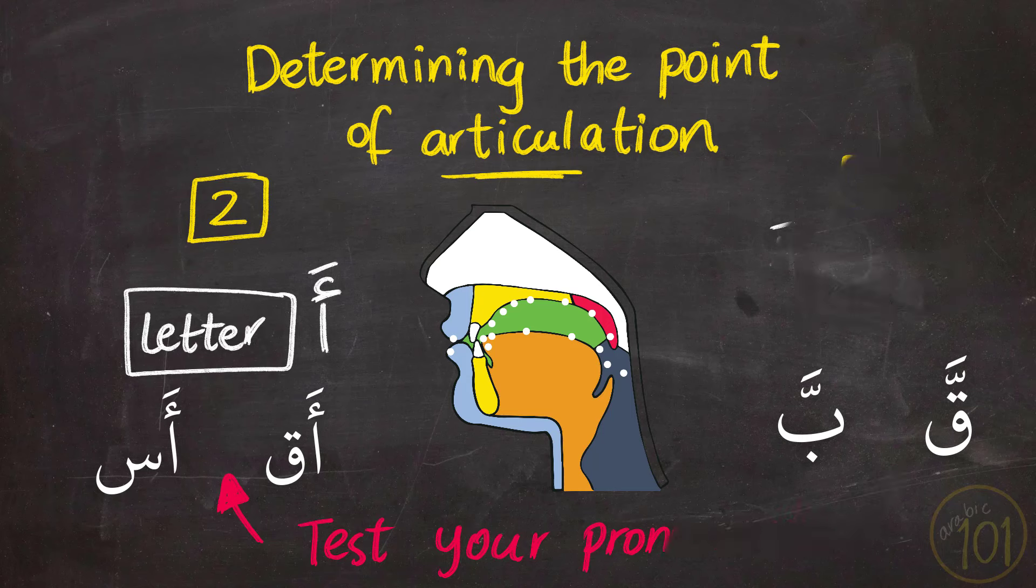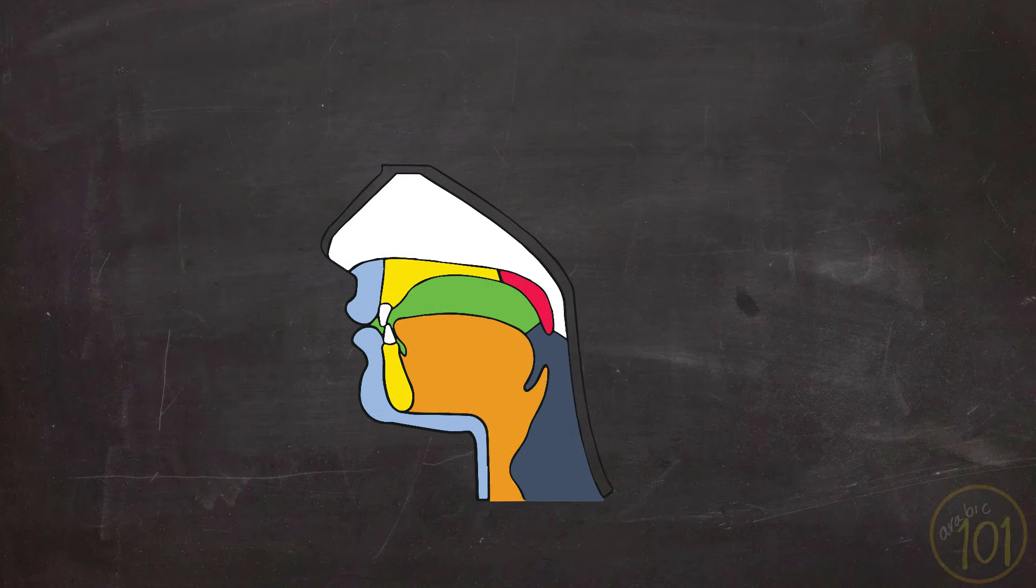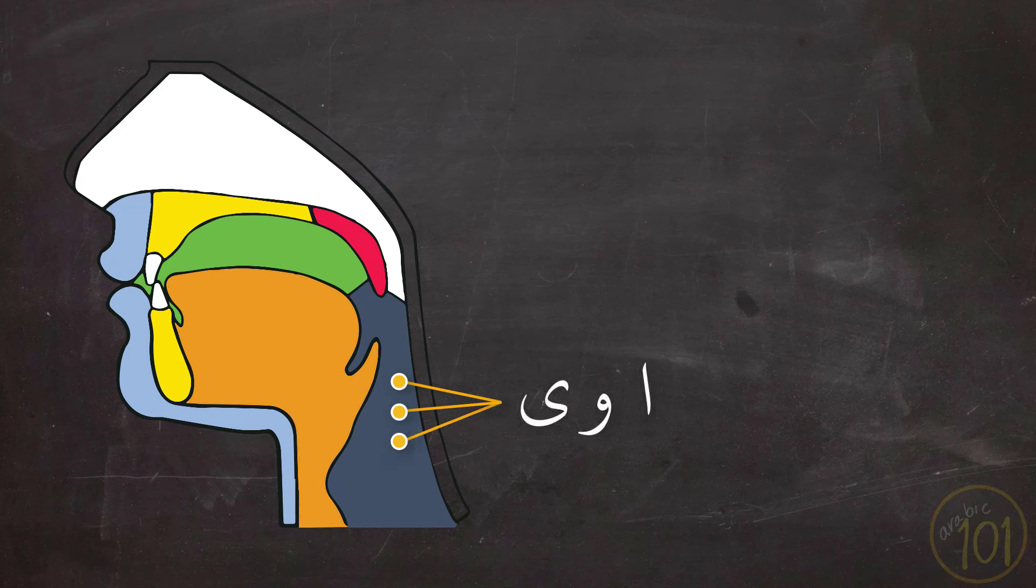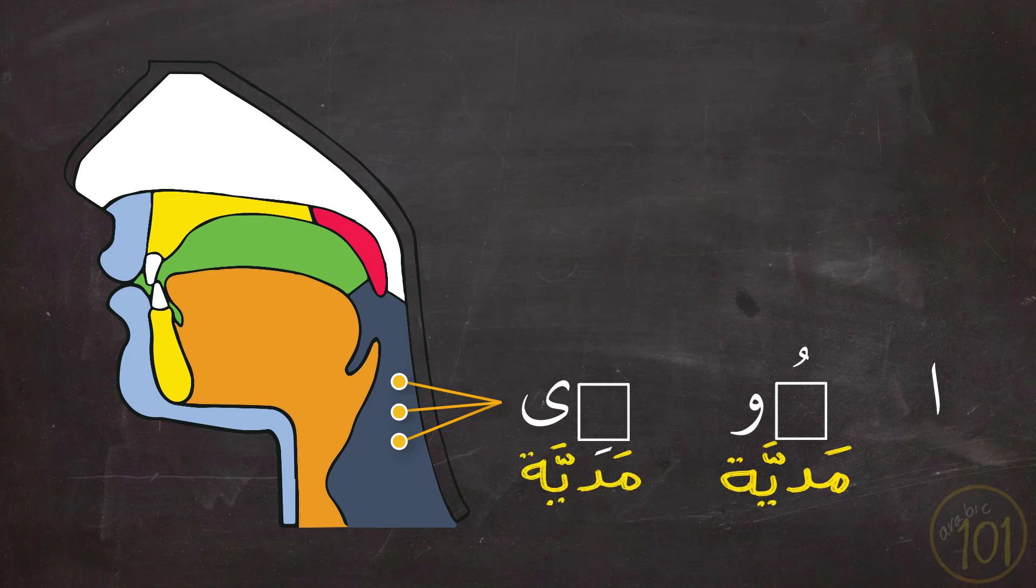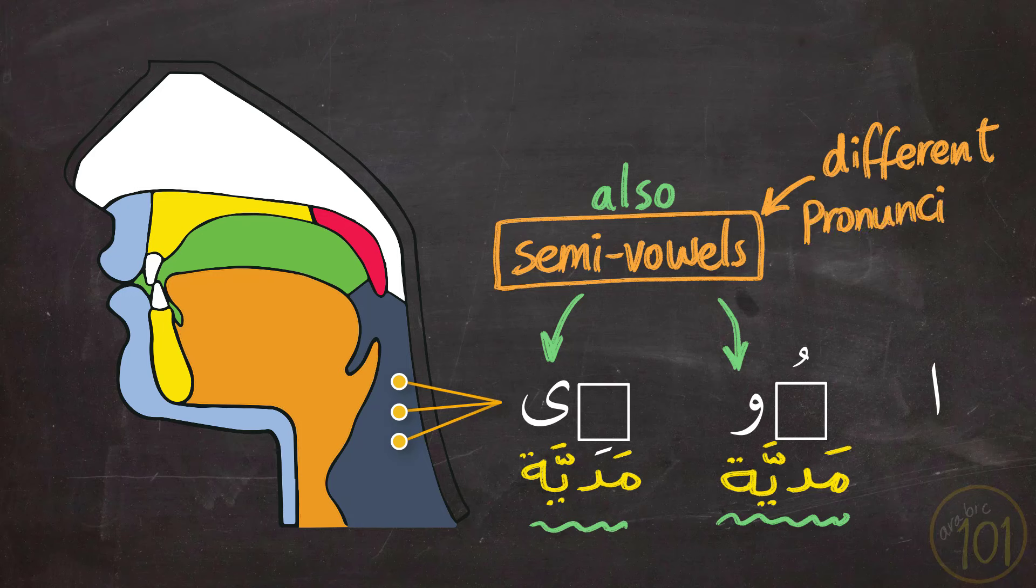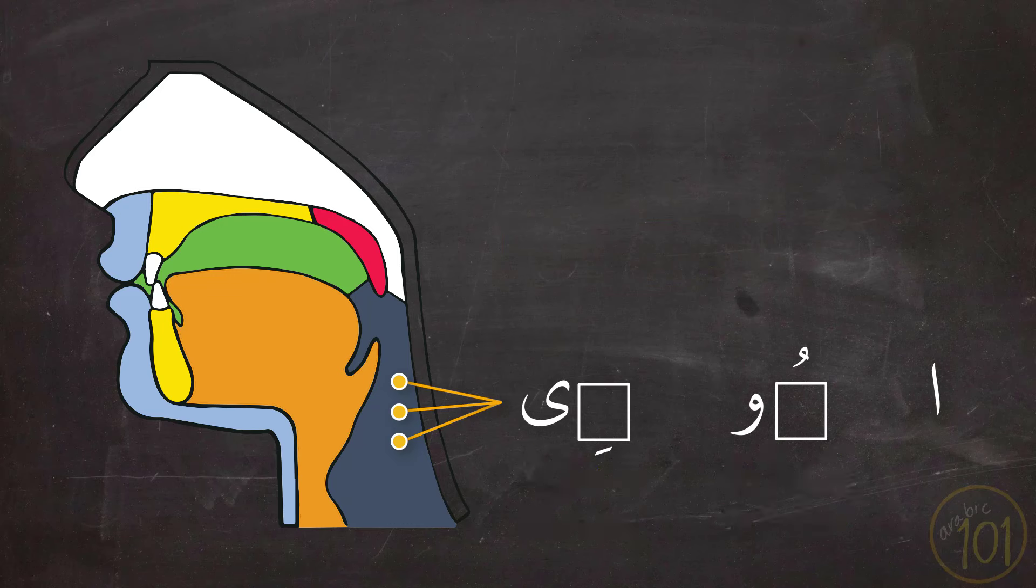All right, now that we know the basics of studying Makharaj, let us start with the first and the easiest area of articulation, which is the oral cavity. This area is the Makharaj of the three long vowels, which are Alif, the second is Waaw preceded by Dhamma, and that is Alwaawul Maddiya, and last is Yaa preceded by Kasra, and it is also called Alyaaul Maddiya. Naturally, we add the word Maddiya after Waaw and Yaa because there is another version of these two letters in which they are not functioning as a long vowel. But now we're only focusing on the three mad letters.